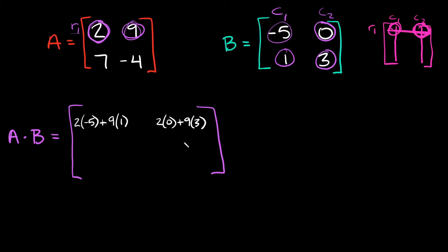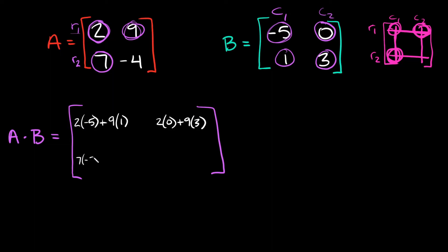So now I know I have two more spots to fill in. I know I'm going to have row two and column one, so that's going to be on the bottom left. So I'm going to multiply row two times column one. Again, you go down the row, down the column. So we're going to do seven times negative five, plus going down the row, down the column, negative four times one.